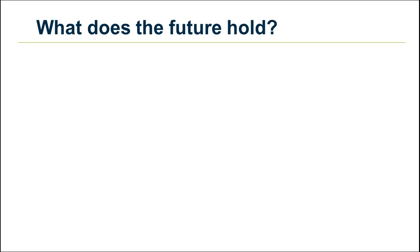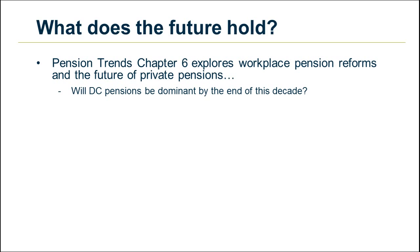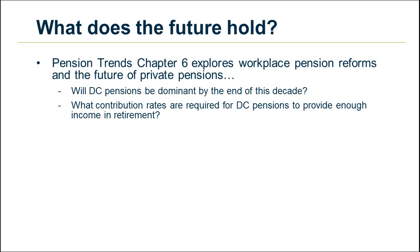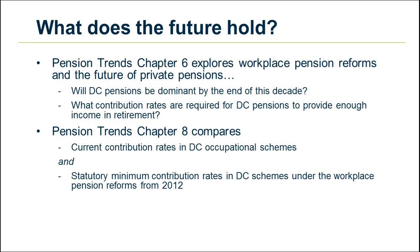This podcast is based on information from Pension Trends, Chapters 6 and 8. Chapter 6 looks in more detail at the government's workplace pension reforms and the future of private pensions. It addresses questions like: will defined contribution pensions be dominant by the end of this decade, and what contribution rates are required for defined contribution pensions to provide enough income in retirement? Chapter 8 compares current contribution rates in defined contribution occupational schemes with the statutory minimum contribution rates that will be required under the workplace pension reforms, starting from 2012.